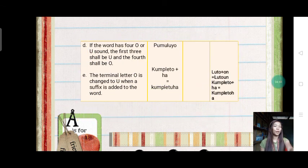Letter d. If the word has four u or o sounds, the first three shall be u and the fourth shall be o. The example here in Hiligaynon is pamuluyo.